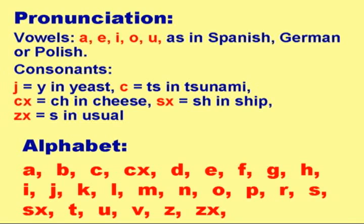Consonants: Y as in 'yeast'; C as in 'tsunami'; Ch as in 'cheese'; Sh as in 'ship'; J as in 'usual'.